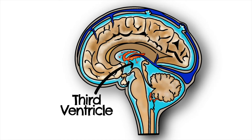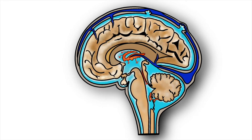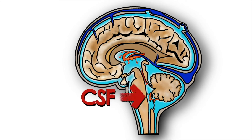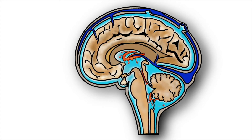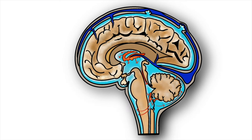From the third ventricle it then travels through the cerebral aqueduct, also known as the aqueduct of Silvius, flowing into the fourth ventricle. From the fourth ventricle the CSF passes into the subarachnoid space through four openings: the central canal of the spinal cord, the median aperture, and the two lateral apertures.